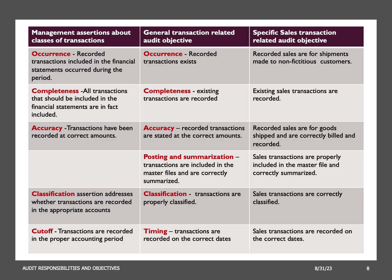Classification pertains to the proper categorization and presentation of transactions and items in the financial statements. It asserts that transactions are correctly classified into appropriate accounts and categories according to accounting standards. The auditor's objective is to gather sufficient and appropriate audit evidence ensuring transactions are accurately classified, maintaining the clarity and accuracy of financial reporting. For example, a company that provides both products and services must differentiate between revenue generated from product sales and revenue from service contracts; the classification assertion ensures that revenue is properly categorized and presented.